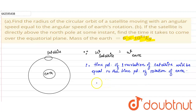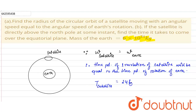As we know that the Earth rotates in 24 hours, the time period of one revolution of the satellite is 24 hours, or equivalently 24×3600 seconds.